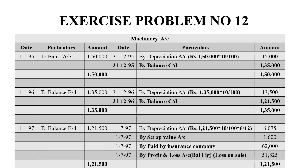Now we open the machinery account. On 1-1-1995, machinery was purchased — debit to Bank Account Rs. 1,50,000. Depreciation on the credit side is Rs. 15,000, giving a balance of Rs. 1,35,000 carried down. In 1996, depreciation is Rs. 13,500. In 1997, the opening balance brought down is Rs. 1,21,500, and for 6 months depreciation is Rs. 6,075.